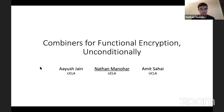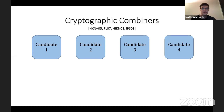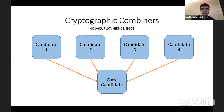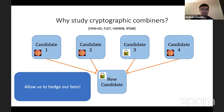What is a cryptographic combiner? A cryptographic combiner takes many candidates for a cryptographic primitive and combines them to get a new candidate. The guarantee is that even if all but one of the candidates are broken, as long as one candidate is secure the new candidate is secure. Cryptographic combiners let us hedge our bets on the security of candidates when we have many different candidates and aren't sure which one is secure.